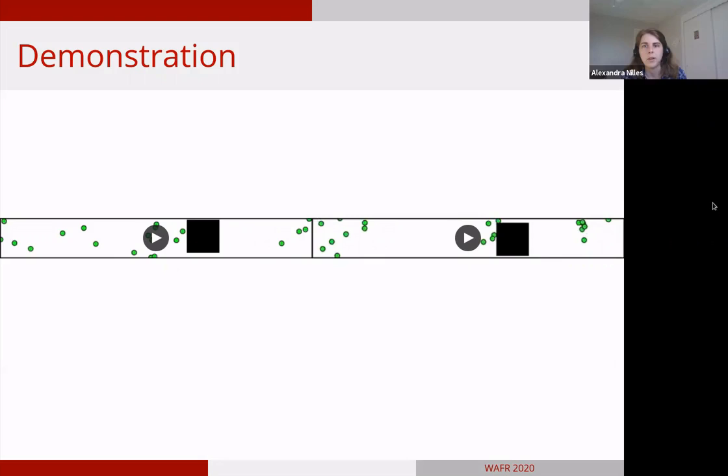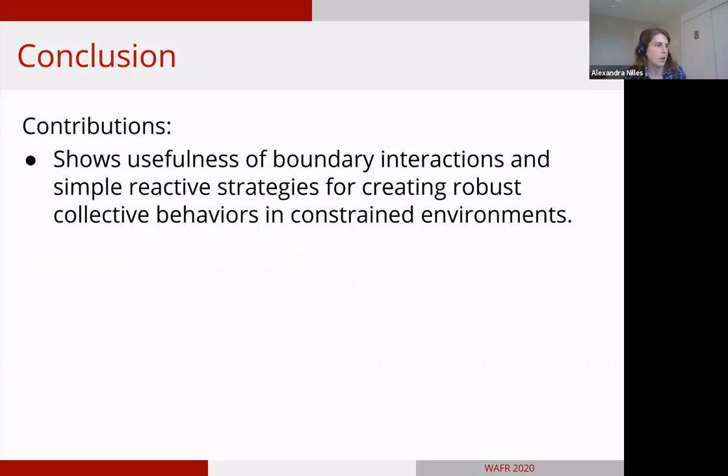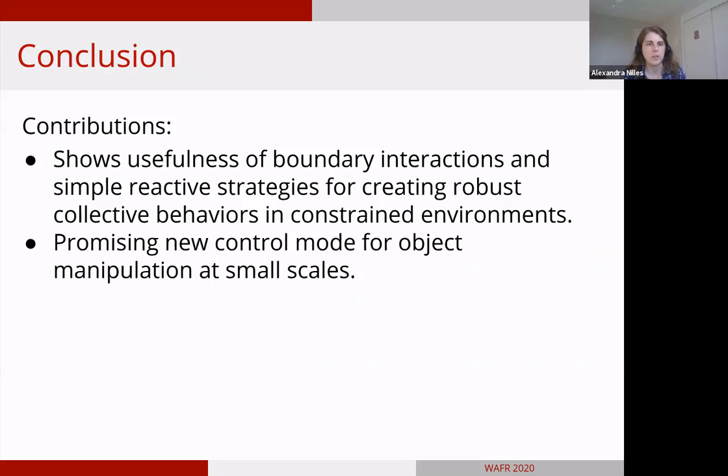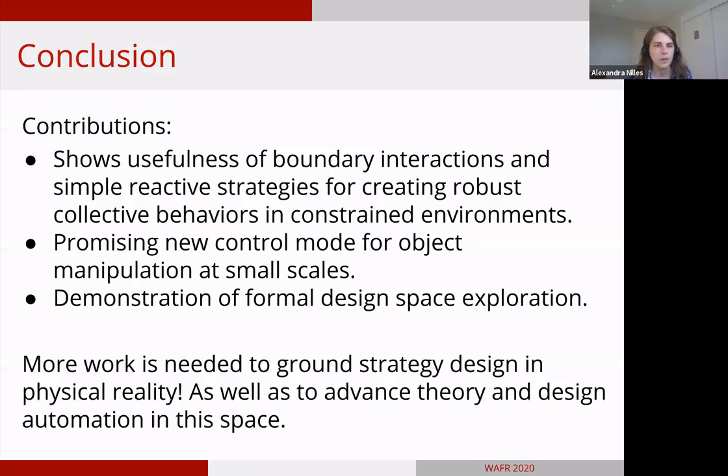In conclusion, we're really excited about this work. It shows the usefulness of boundary interactions and simple reactive strategies for creating robust collective behaviors in constrained and complicated environments. It's a promising new control mode for object manipulation or other tasks at small scales because it just relies on how the agent interacts with the boundary. And it's a demonstration of how to do a formal design space exploration. Really taking the time to model what primitives we have available as well as what our high level controller needs to look like, and what kind of trade-offs we give by taking away sensors.